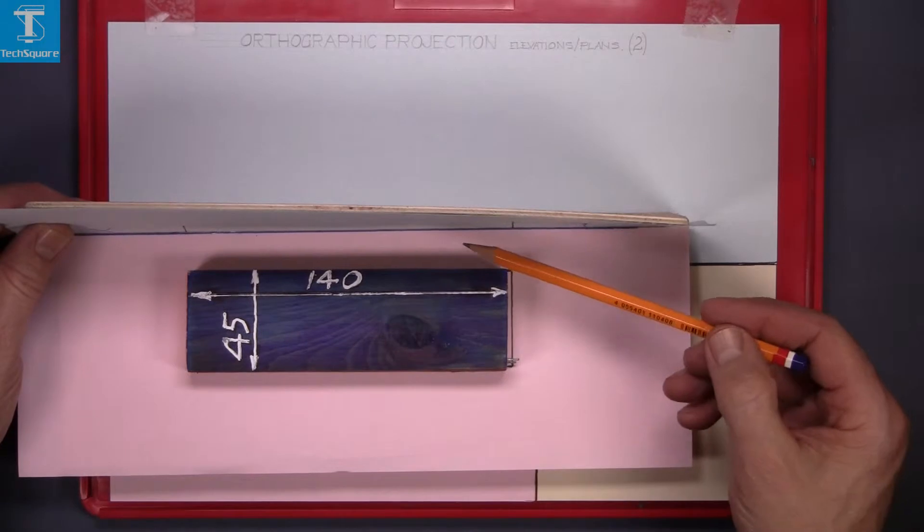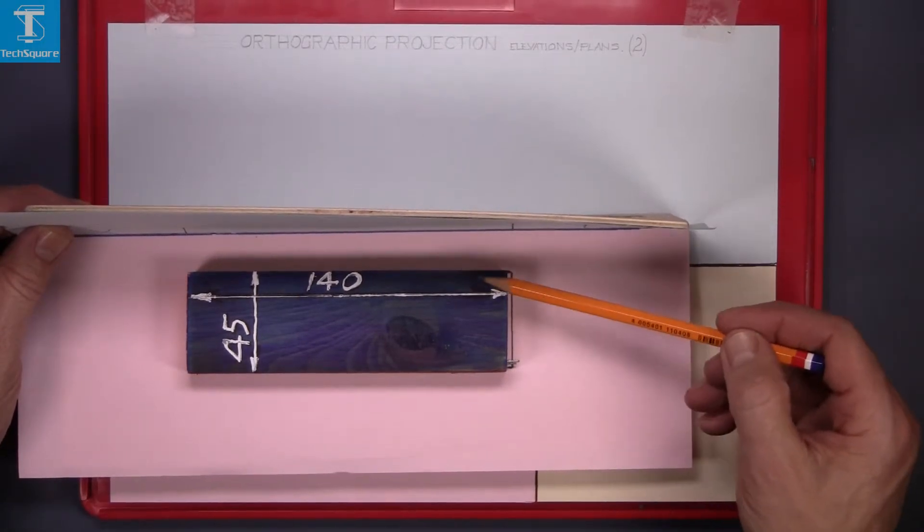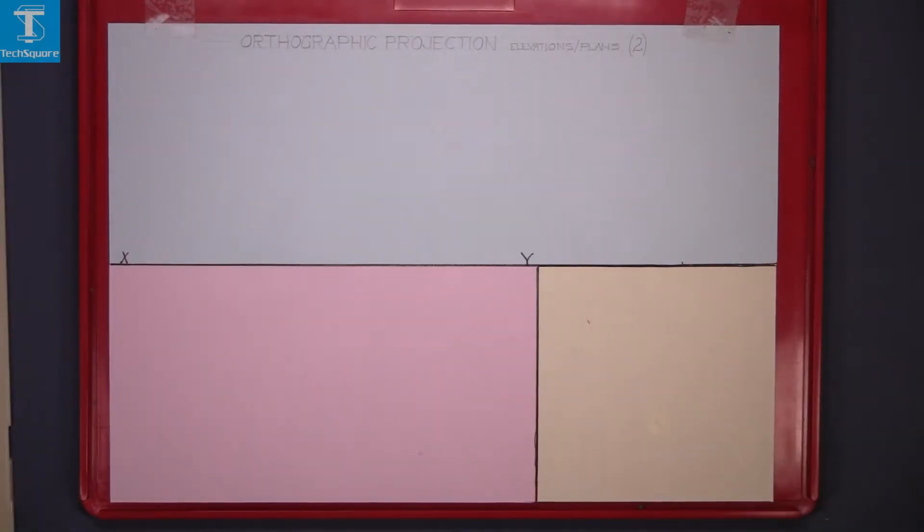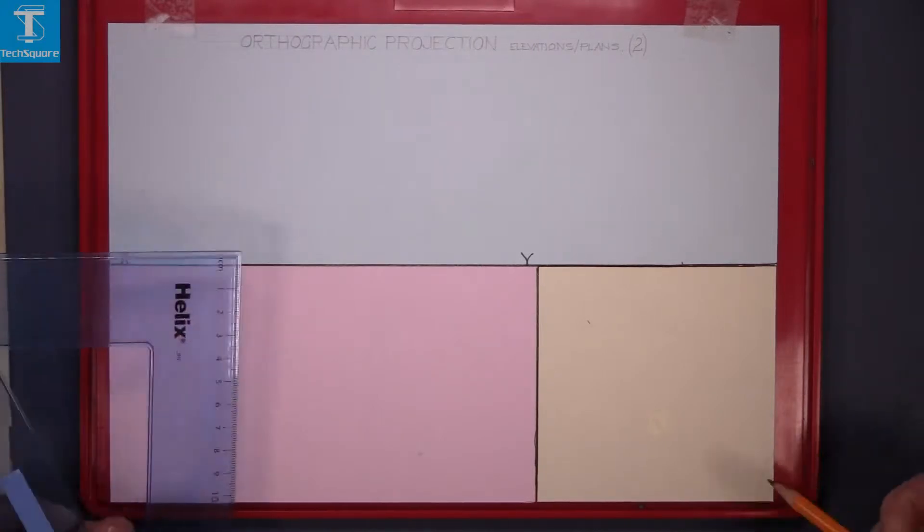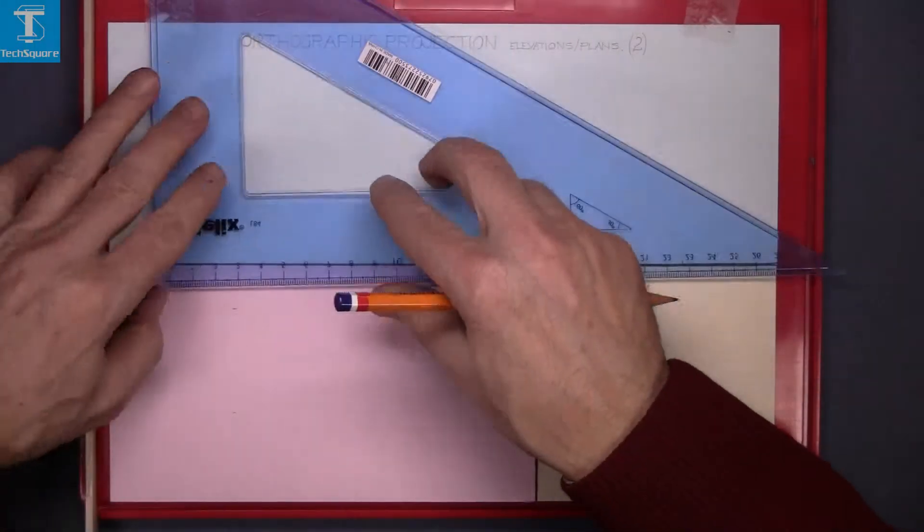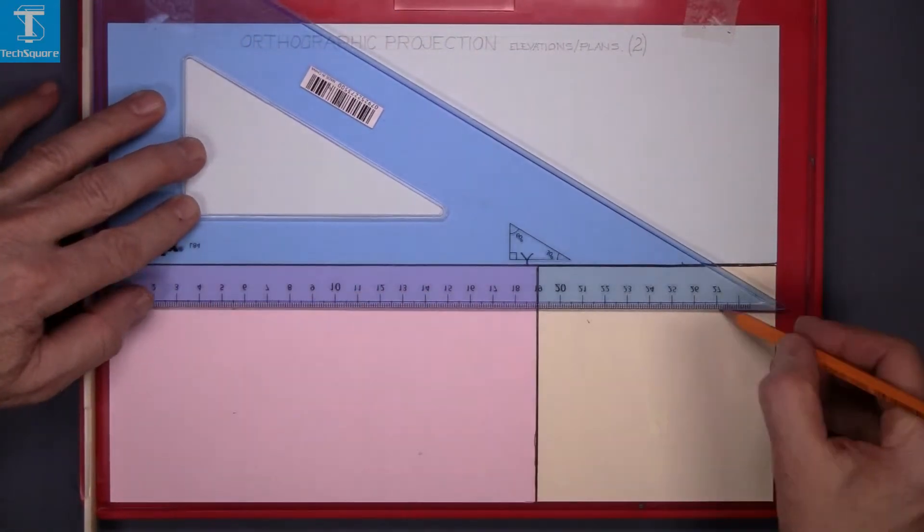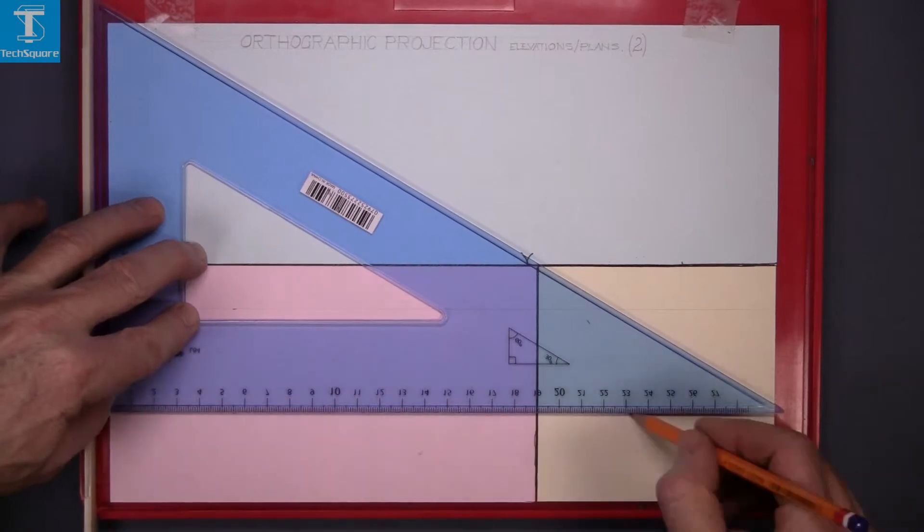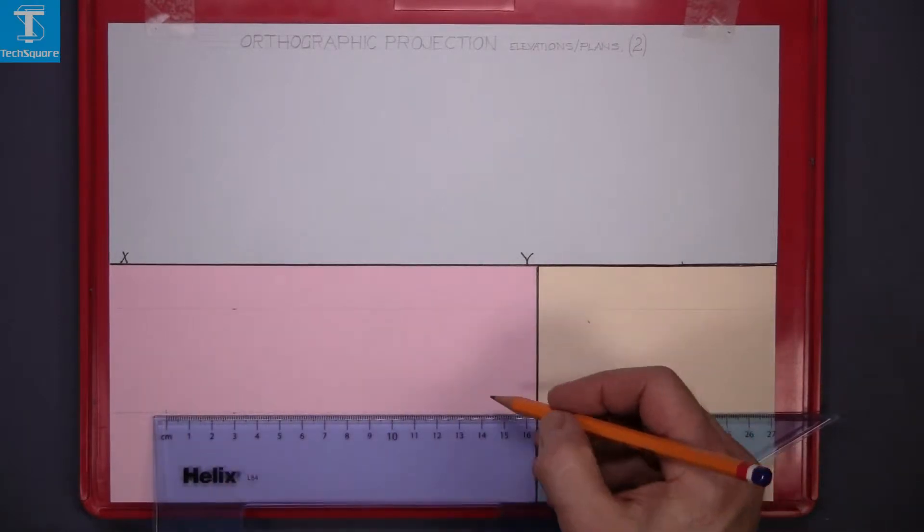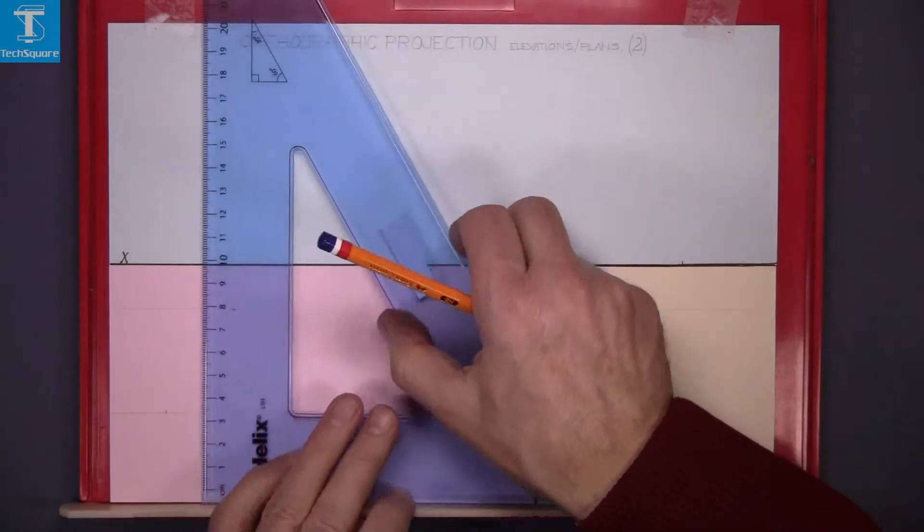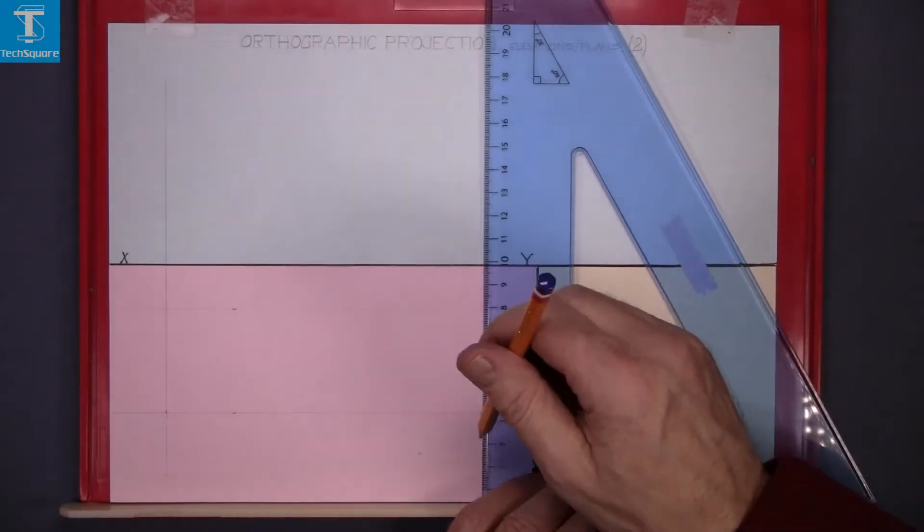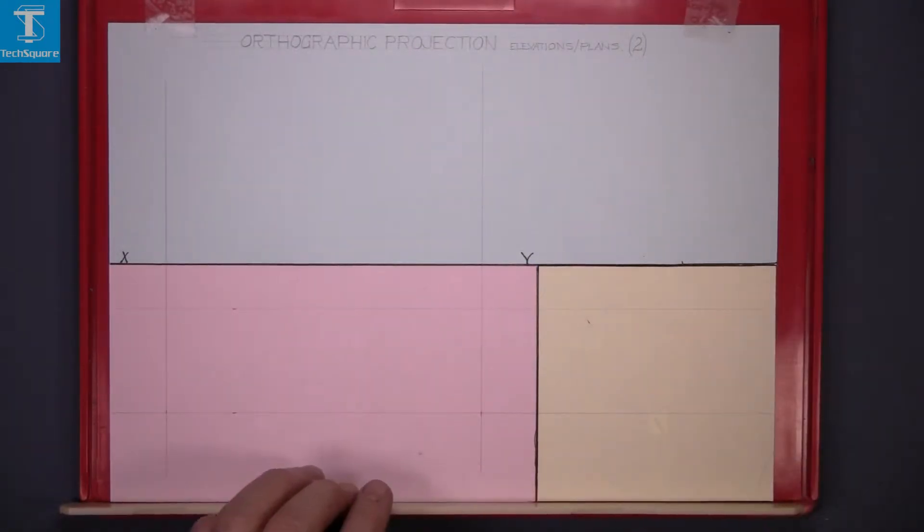I want to draw the plan of this block. The distance out from the vertical plane here is 20 and the width of the block is 45 and the length of it's 140. So mark down 20 from the XY line and then 45 down, and draw your two lines horizontally across the sheet. Now choose a starting point for the plan and then measure 140 across and draw two vertical lines. Again let them run the length of the sheet, the light lines. And that's your plan now.